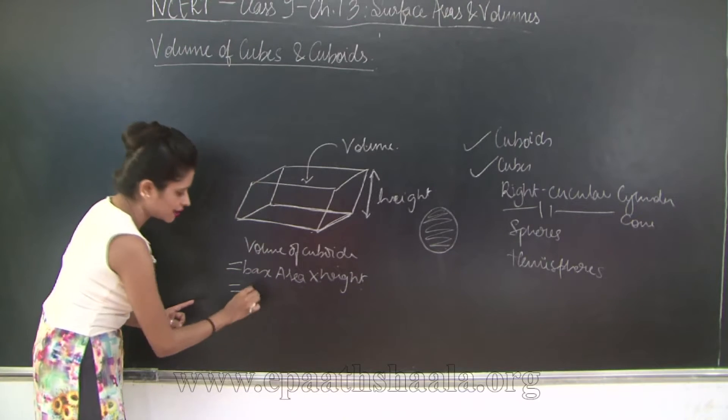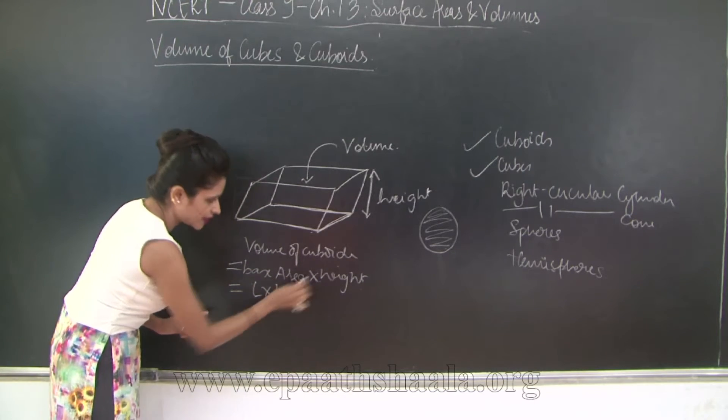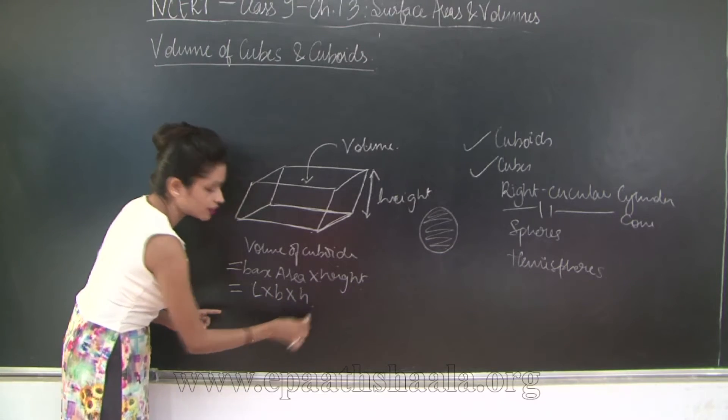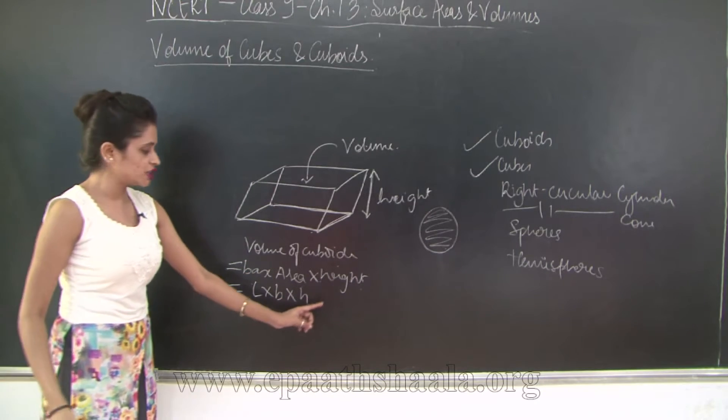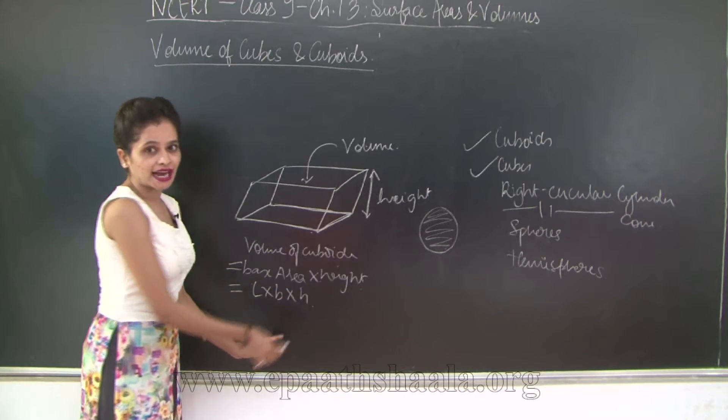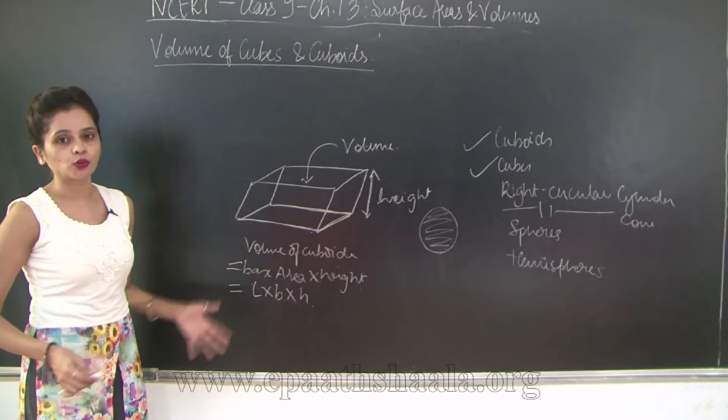So base area is going to be what? Length into breadth. And height we know that we can denote it by h. So volume of a cuboid is L into B into h, where L, B and h stand for the length, breadth and height of the cuboid respectively.